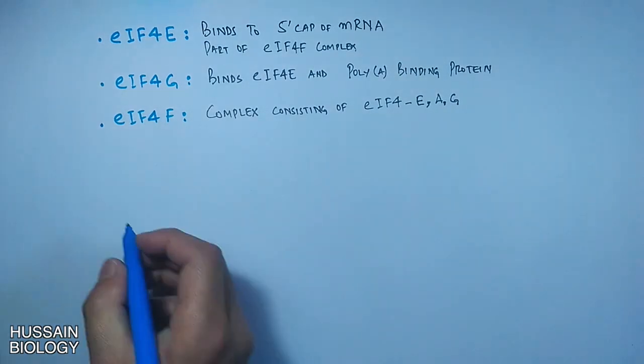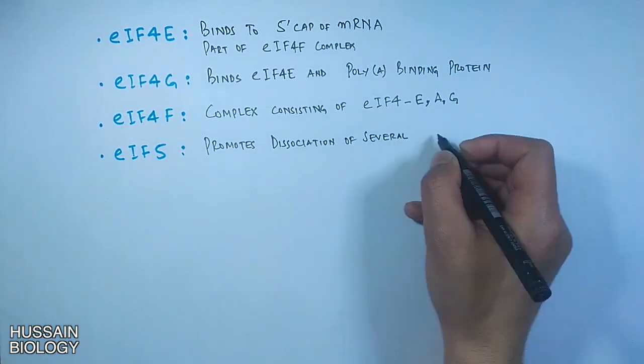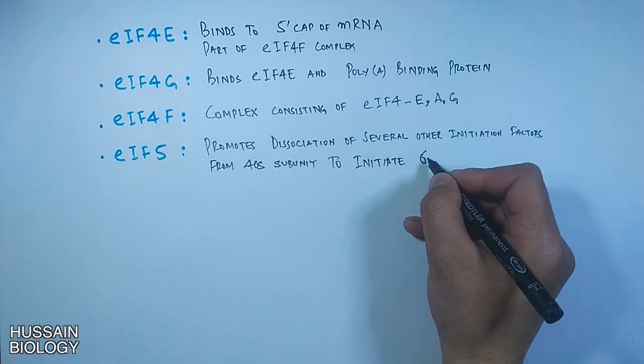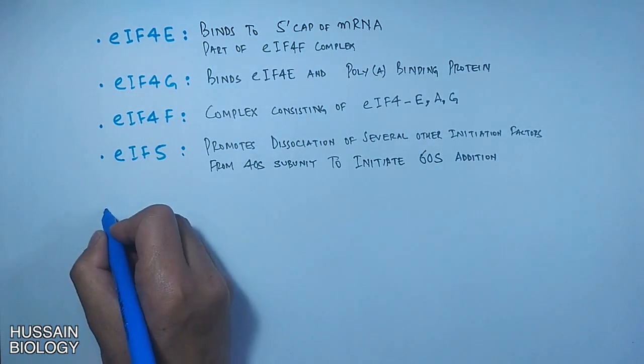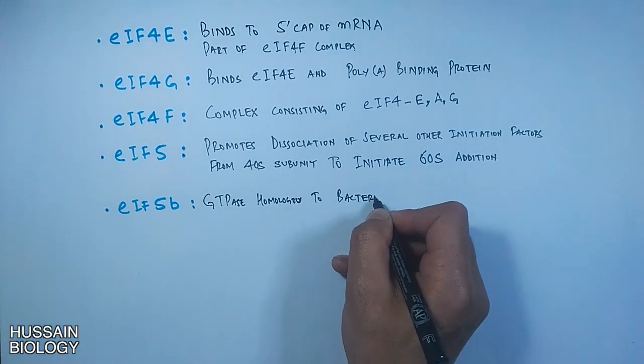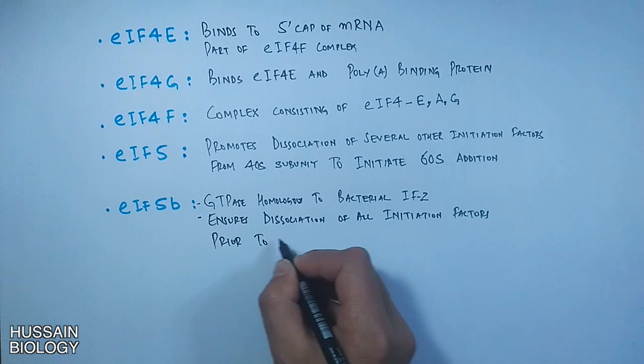And also we have IF5 or EIF5 which promotes the dissociation of several initiation factors and helps in recruiting the 60s subunit to the 40s subunit. Then we have EIF5b, a GTPase homolog to bacterial IF2, which ensures dissociation of all factors before final ribosomal assembly.